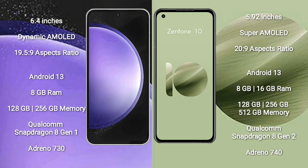Samsung Galaxy S23 FE comes with 8GB RAM and 128GB or 256GB internal storage, Qualcomm Snapdragon 8 Gen 1 processor, and Adreno 730 GPU. Asus Zenfone 10 comes with 8GB or 16GB RAM and 128GB, 256GB, or 512GB internal storage, Qualcomm Snapdragon 8 Gen 2 processor, and Adreno 740 GPU.